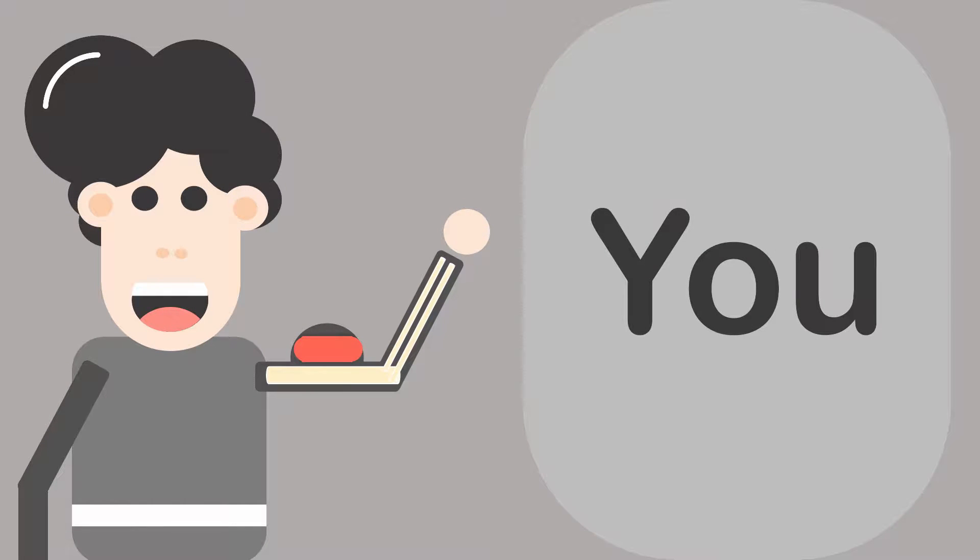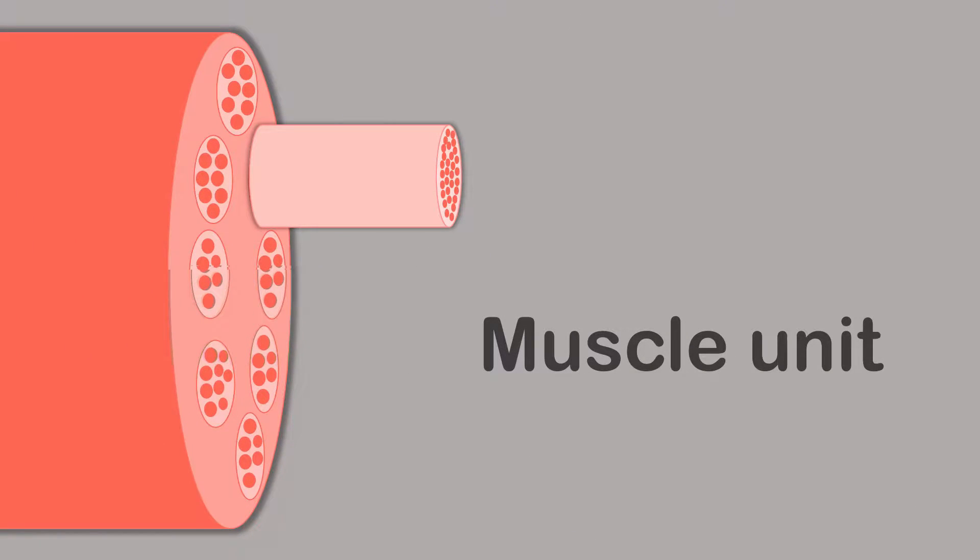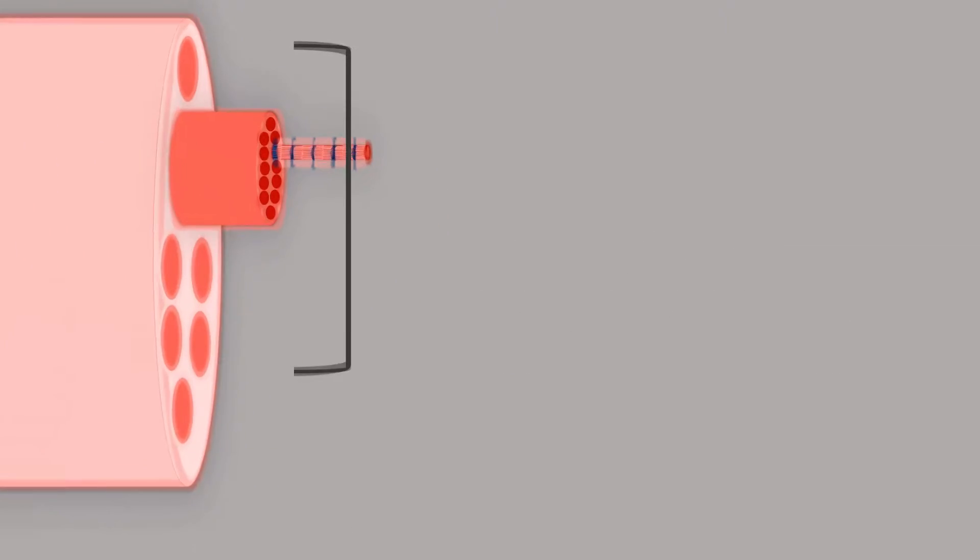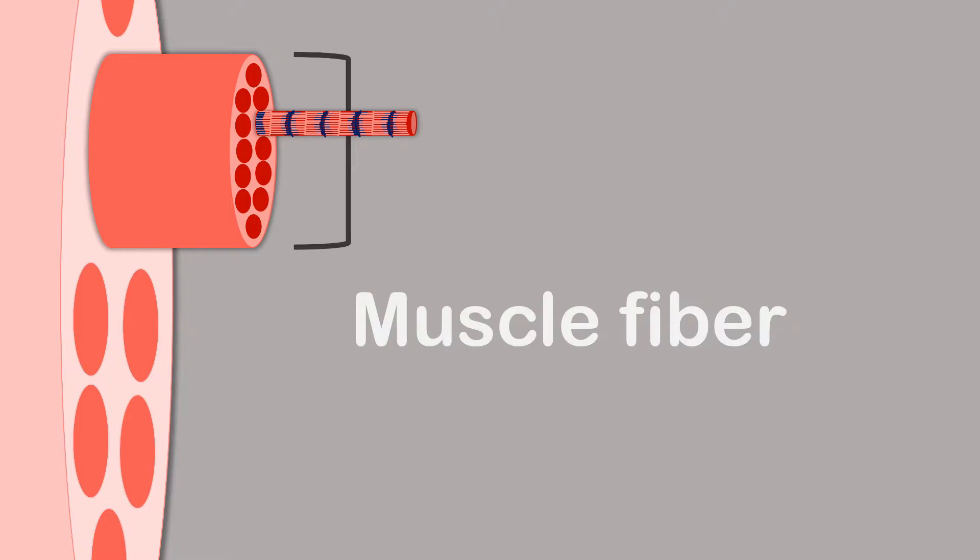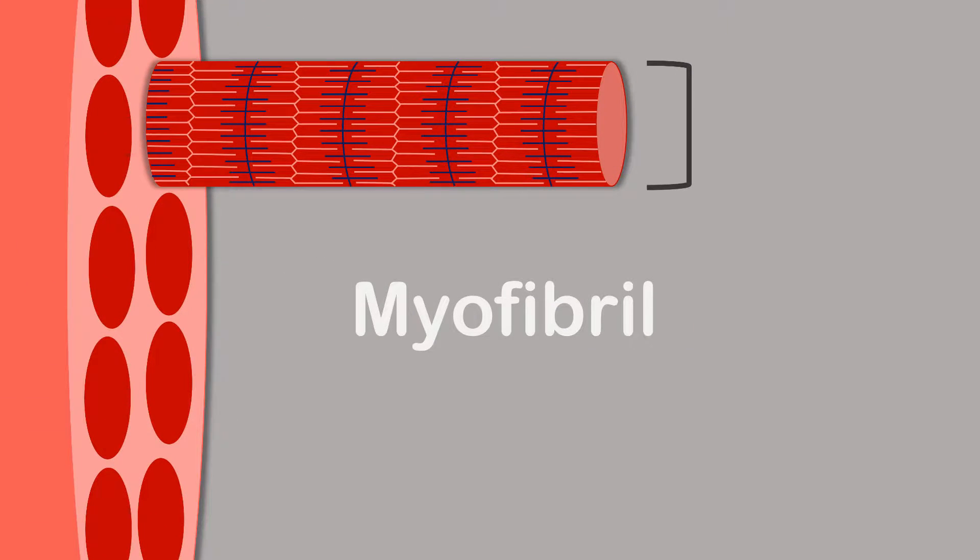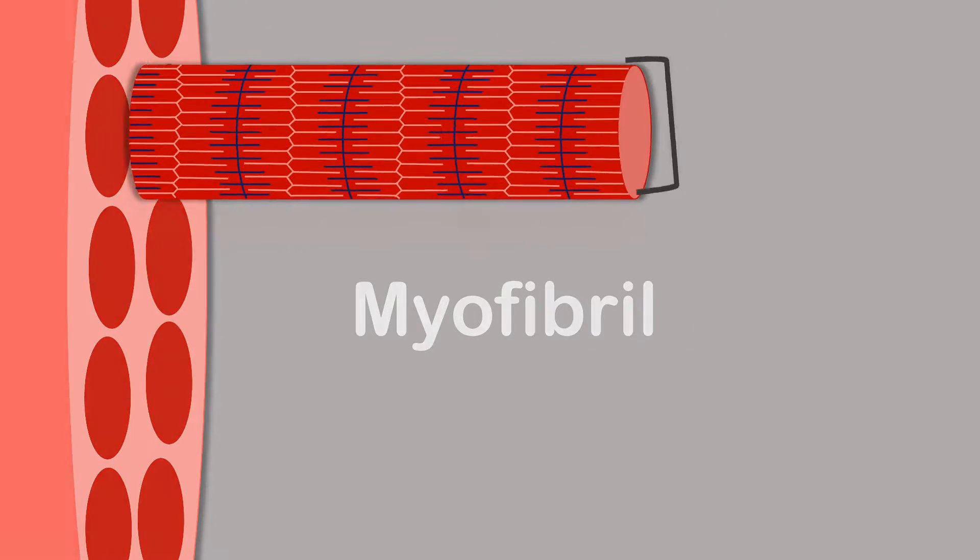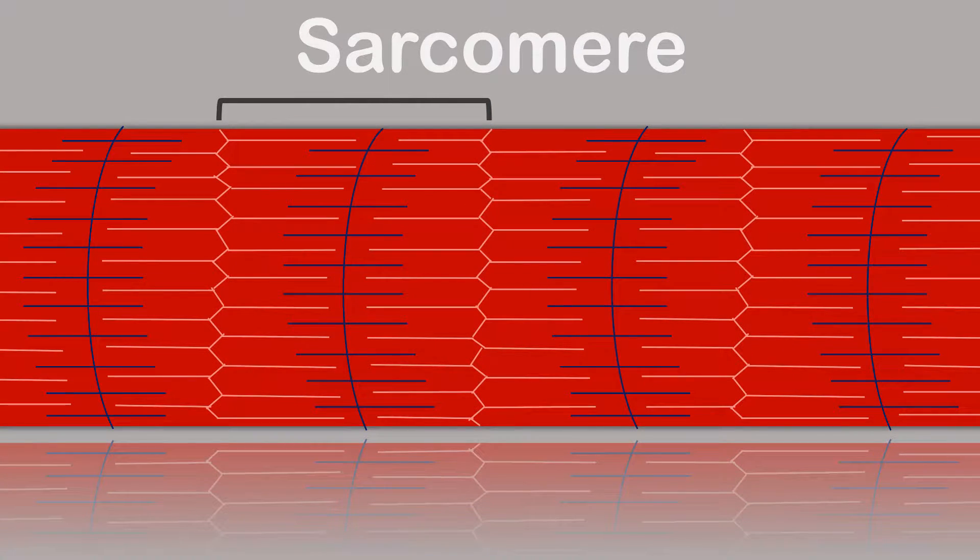We looked at the gross structure, which is the whole muscle unit connected to the bone via tendons. Here it is, the muscle unit, and then we break it down into its smaller and smaller parts: the fascicle, the muscle fiber, the myofibril, and also the sarcomeres that make up the myofibril. And this is where we ended, but that is where we're going to start today.